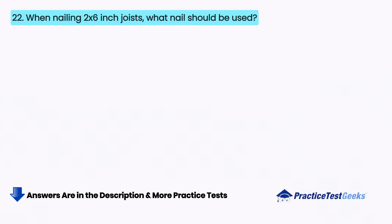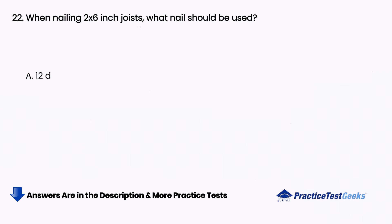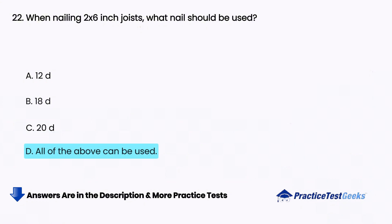When nailing 2 by 6 inch joists, what nail should be used? A. 12D, B. 18D, C. 20D, D. All of the above can be used.